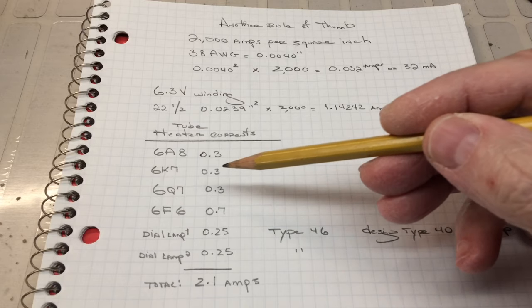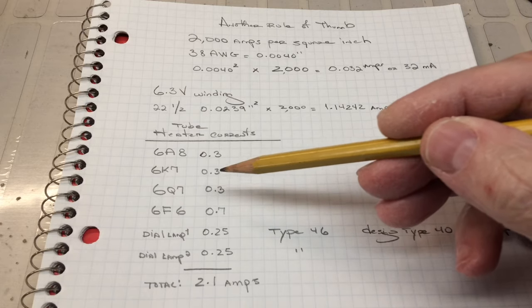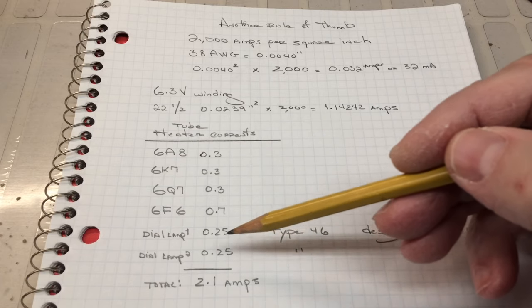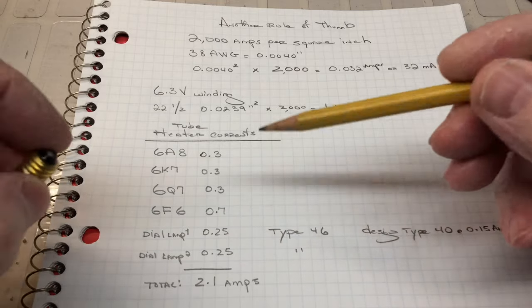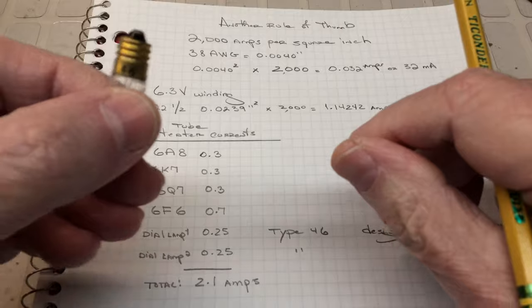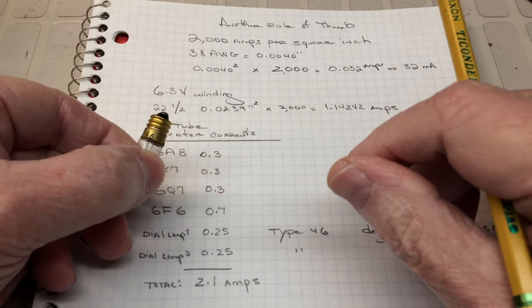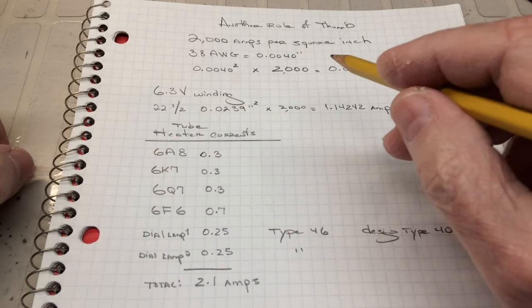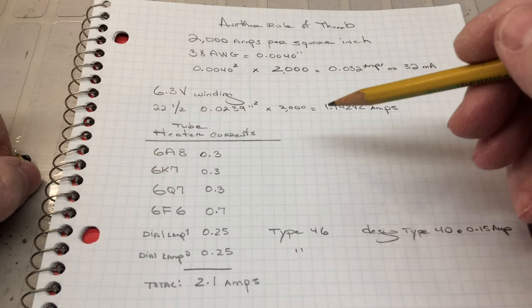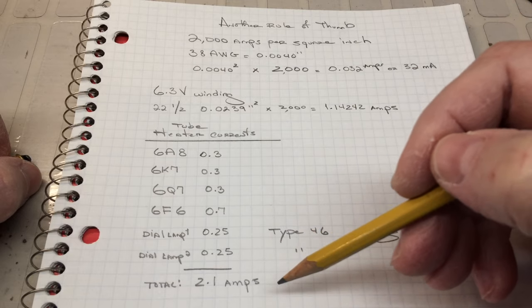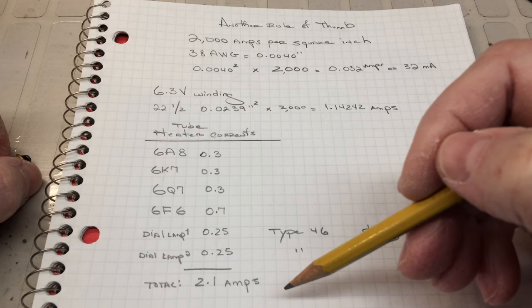If we look at the tube complement for the receiver, add up everything, including the two dial lamps, and you'll notice I've got a Type 46 dial lamp that was used in the receiver, or at least it was found that way. I'm not sure if that's the way it was from the factory. If we add two of those in there, because there's two dial lamps, we're just north of 2 amps at 2.1 amps.